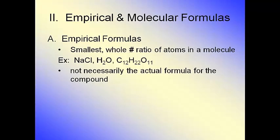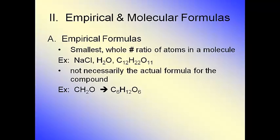Many times, empirical formulas are the actual formula for the compound. Like the three examples — sodium chloride is table salt, water, and C12H22O11 is sucrose — all of them are the actual formula for the compound. But sometimes they're not. For example, CH2O is an empirical formula, but C6H12O6 is not the smallest whole number ratio, because 6, 12, and 6 can all be divided by 6 to form CH2O.